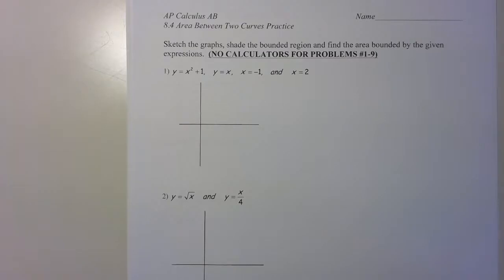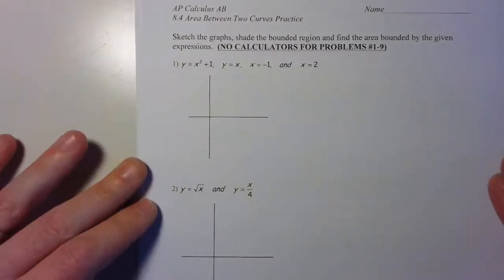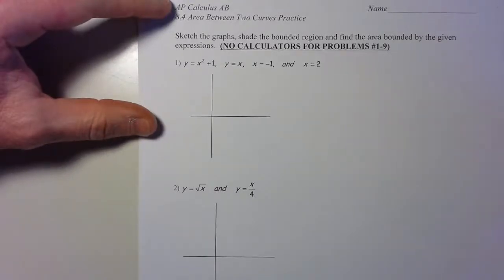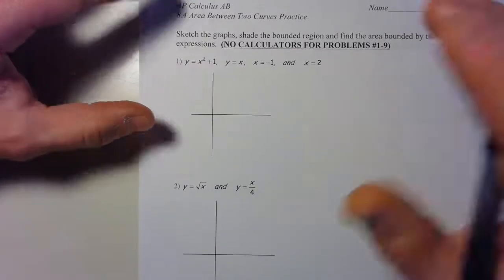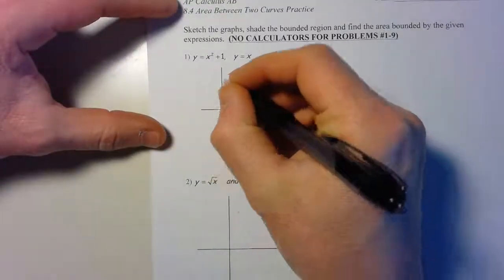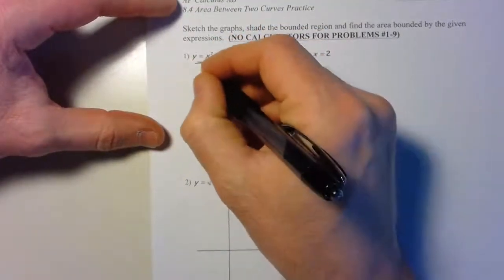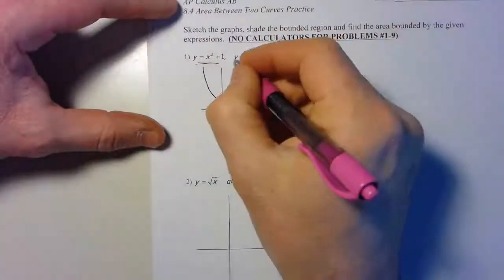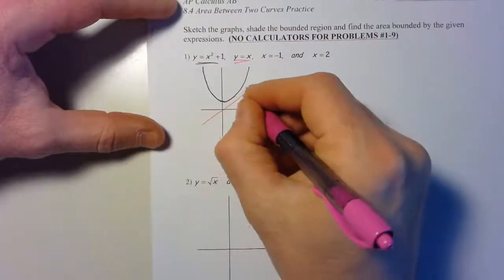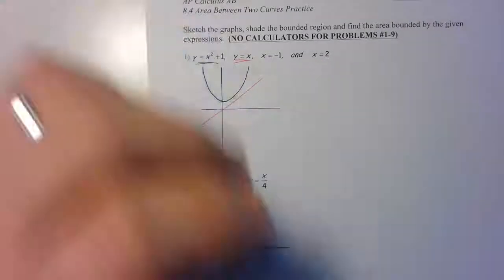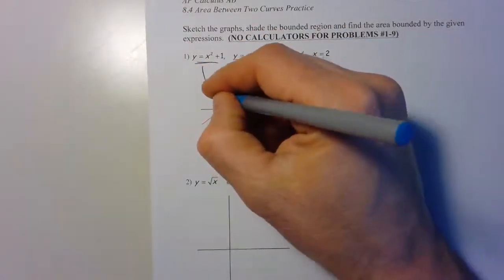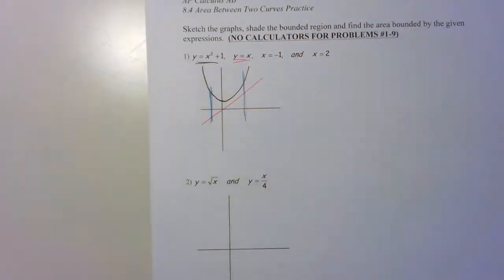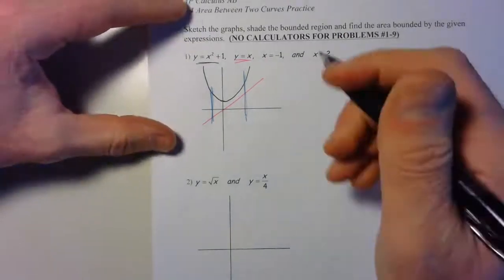Let's jump into it. Sketch the graph, shade the bounded region and find the area between the area bounded by the given expressions. Everything is mixed together so we don't know exactly which method we're gonna be using here. There's my graph there, y = x² + 1, and here's my second equation y = x. Between x = -1 and x = 2.